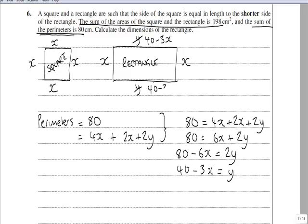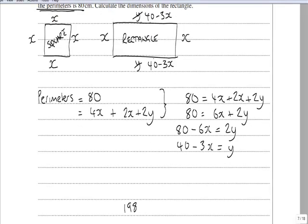Now the only bit of information we haven't yet used is that the area of the square and rectangle together is 198. So my next stage would be to then equate the areas. So the areas I know equal 198 and I also know the area of the square is x squared and the area of the rectangle is x brackets 40 minus 3x, length times width.